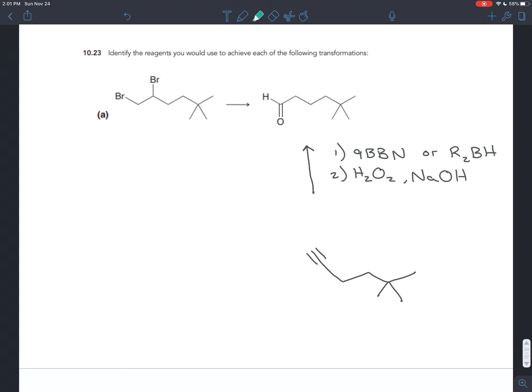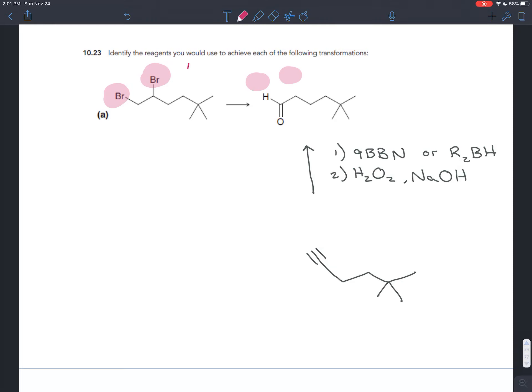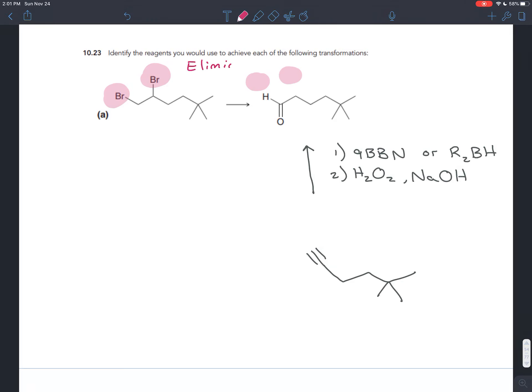But if you get stuck going backwards, start from the beginning molecule. What changes here, and what associations does that have for you? You'll notice there are two bromines here. Those aren't on the final product. In other words, we have to do elimination.